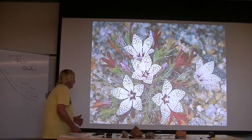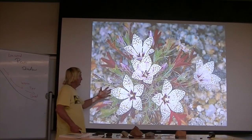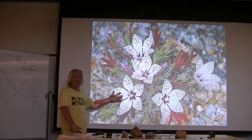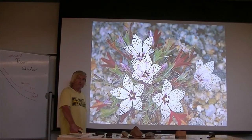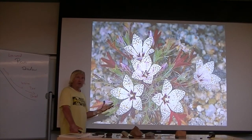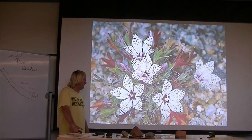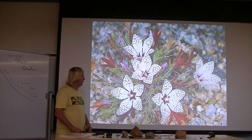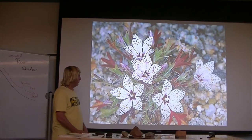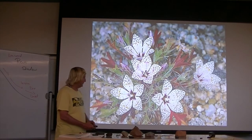During springtime, deserts can be very beautiful when they receive ample rainfall and flowers bloom. But when the rain stops and temperatures start to rise, these flowers quickly become dead plants.